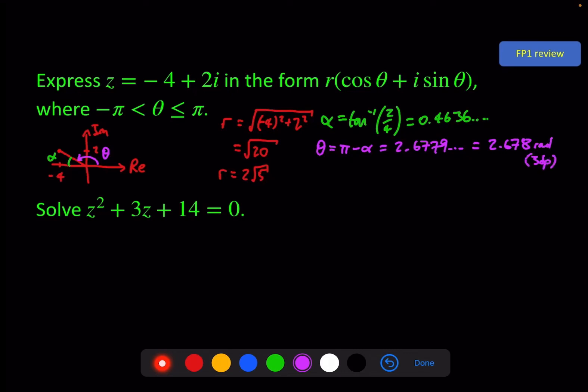Now we've got all of the information, we can write the complex number, z is equal to 2 root 5, cosine of 2.678 plus i sine of the same number, and there we have it.